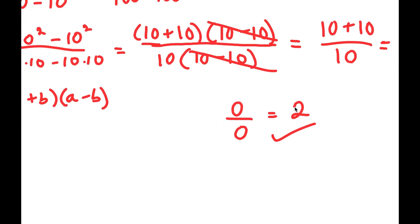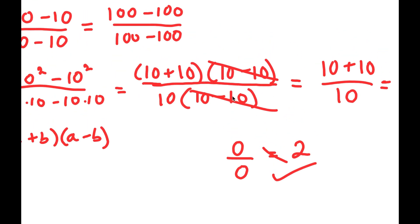Now, obviously this is not a true statement. 0 over 0 is not equal to 2. And if you're wondering where I made the error, it's right on the step where I canceled out (10 minus 10) over (10 minus 10). Remember, 10 minus 10 is equal to 0, so this is implying that 0 divided by 0 is 1. But 0 divided by 0 is not 1 — it's indeterminate. So this is wrong.